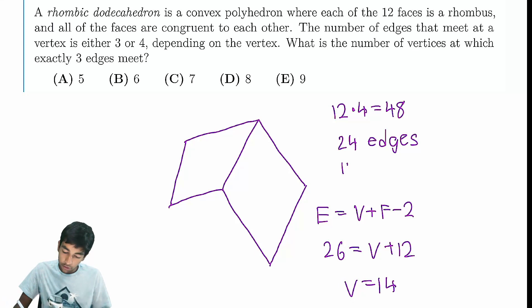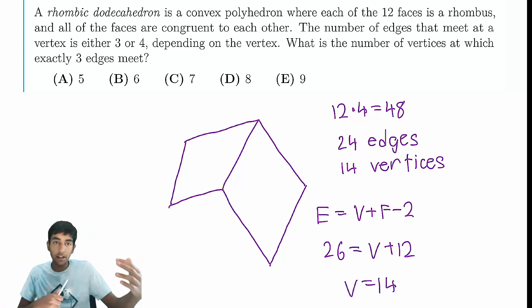That's pretty cool. We now know there's 24 edges, 14 vertices. That's the trick. Whenever you have edges and faces, you can always find the number of vertices. Similarly, if you have edges and vertices, you can always find the number of faces.